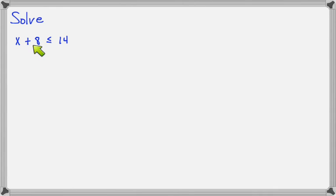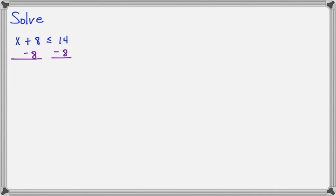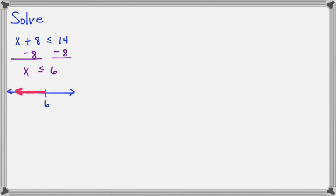Here I have x plus 8 is less than or equal to 14. Just like with an equation, we get rid of the 8 by subtracting 8 from both sides, giving us x is less than or equal to 6. I graph this on a number line, shade to the left, and put a bracket because of the 'or equal to' bar. The interval notation is from negative infinity to 6.